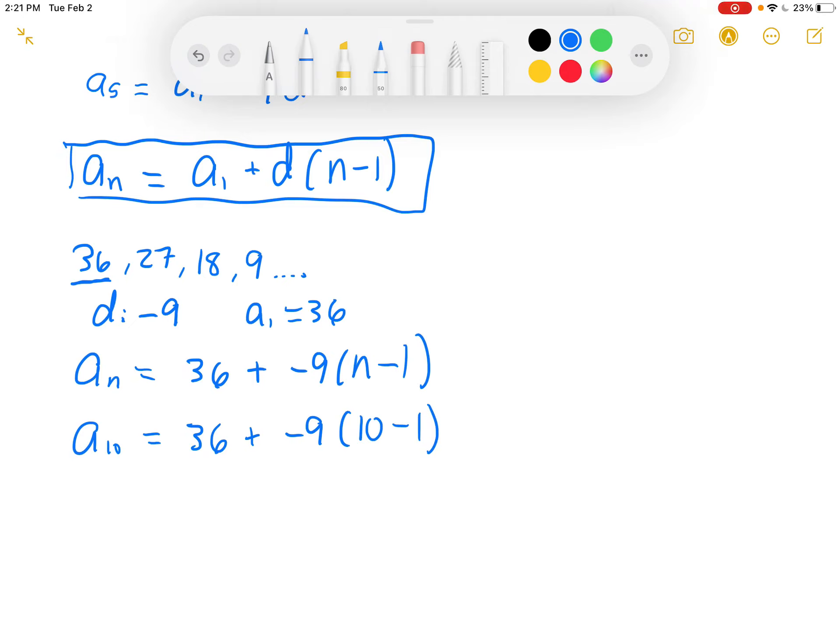Now, from here, it's a pretty simple order of operations problem. 10 minus 1 in parentheses is 9, so then we'd have negative 9 times 9. So 36 minus 9 times 9 would be negative 45. So A10 is equal to negative 45.